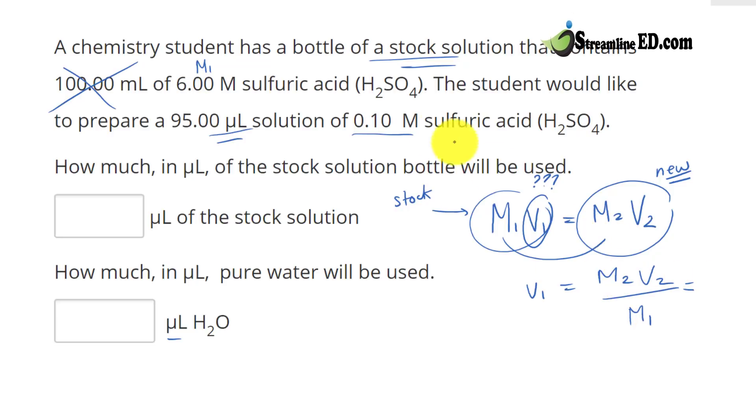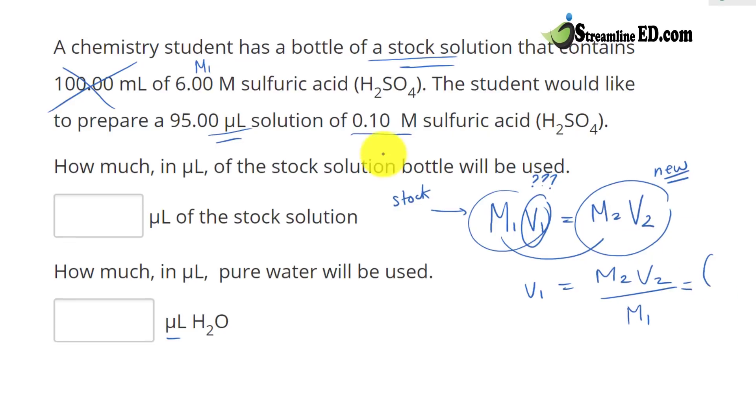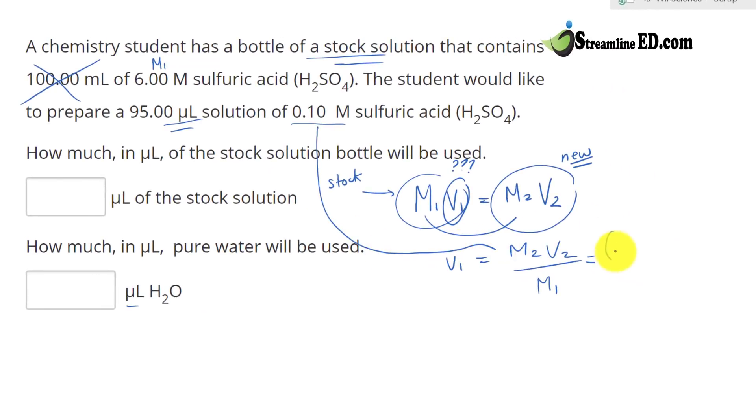And all you have to do is just substitute in. Well, where is your M2? M2 is right here. It is 0.1. Okay? And what about your volume? I want specifically 95. So for now, we are not going to put in the unit or anything like that. 95.00.